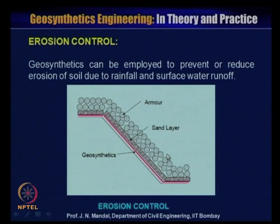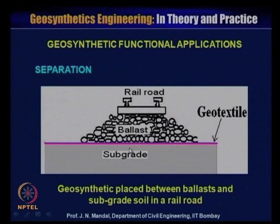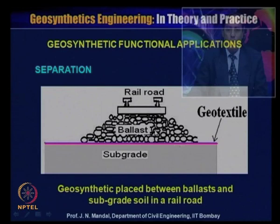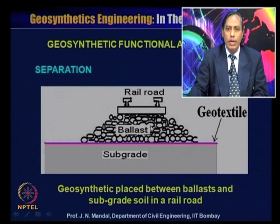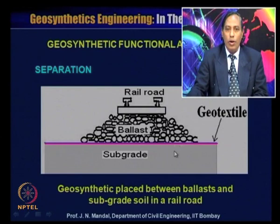Here are some applications of geosynthetics in the separation function. Geosynthetics are placed between the ballast and the subgrade soil in a railroad. The geosynthetic material acts as a separator so that the good quality aggregate of the ballast does not penetrate into the subsoil. This is one of the key applications of geosynthetics as a separation function.